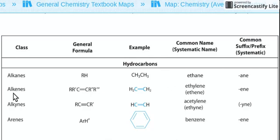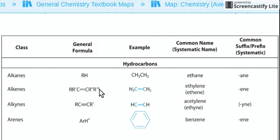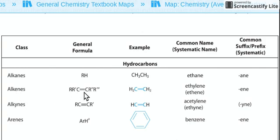The next category is alkenes. Alkenes are still hydrocarbons but contain a double bond. If you see a double bond, you're dealing with alkenes, and their name will end in -ENE. The general formula is R-R'C double bond C-R''. The primary, secondary, or tertiary structure of the alkyl group will be taken up in future videos. The highlight of alkenes is the presence of double bonds.